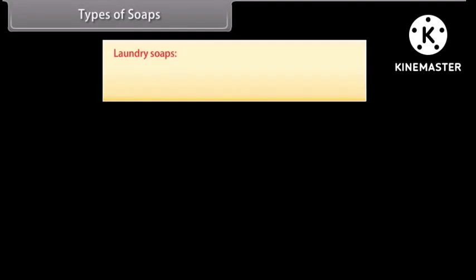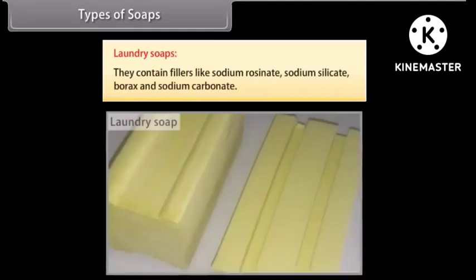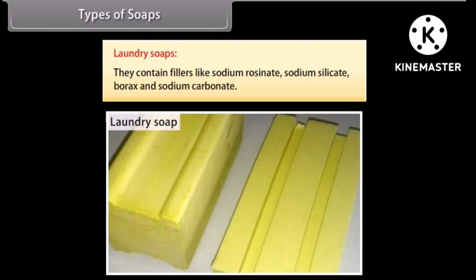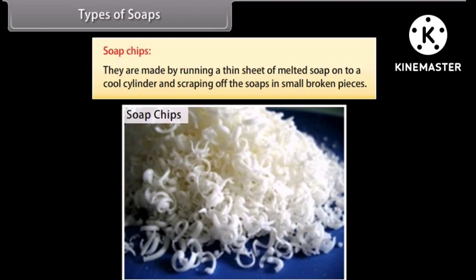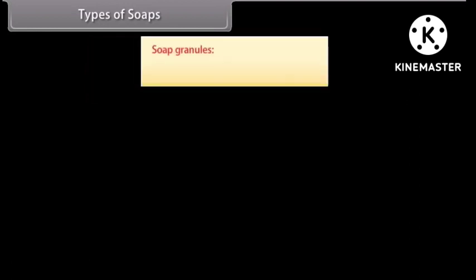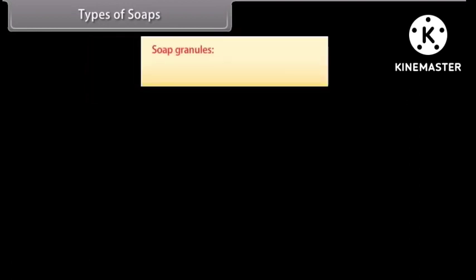Laundry soaps contain fillers like sodium rosinate, sodium silicate, borax, and sodium carbonate. Soap chips are made by running a thin sheet of melted soap onto a cool cylinder and scraping off the soap in small broken pieces. Soap granules are dried miniature soap bubbles.